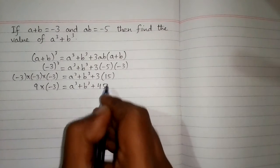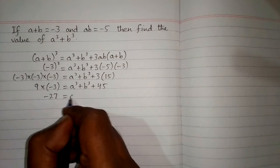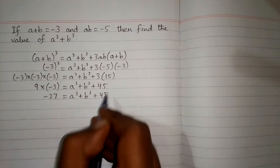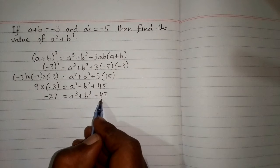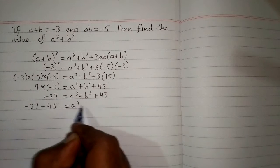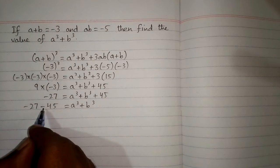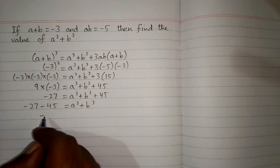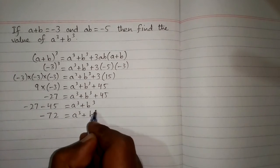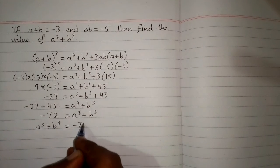9 multiplied by minus 3 is minus 27, and on the other side of the equation we have a cube plus b cube plus 3 multiplied by 15 is 45. So we have minus 27 is equal to a cube plus b cube plus 45. Taking 45 to the other side, it becomes minus 45, and minus 27 minus 45 is equal to minus 72. So the value of a cube plus b cube is equal to minus 72.